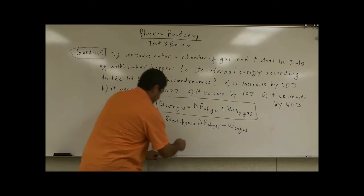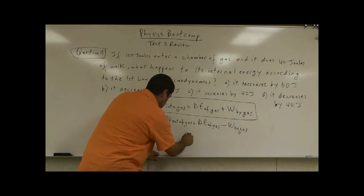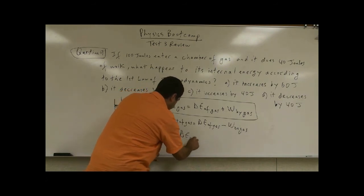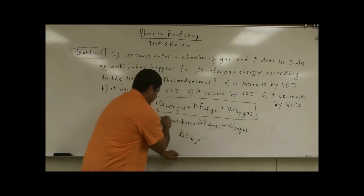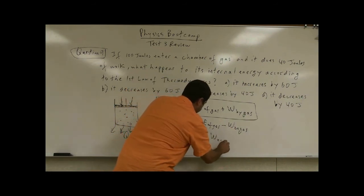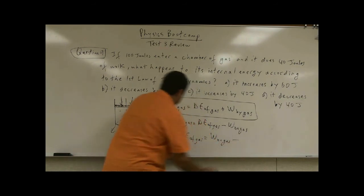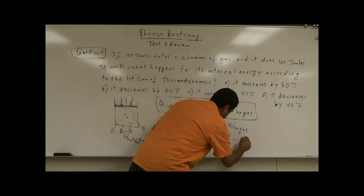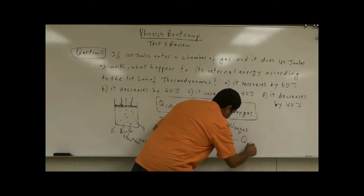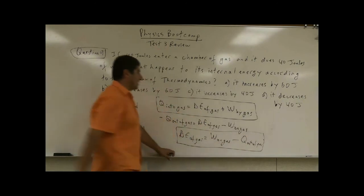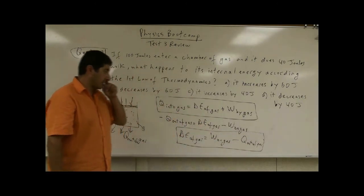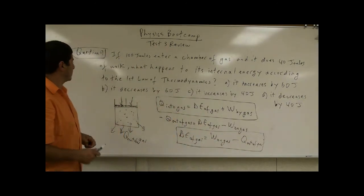So this becomes negative. This one stays positive. This becomes negative. So I could also express it this way. This one goes to the other side. And then you could write this one, isolate this one here. And so you could say delta E of gas is equal to work on gas minus Q out of gas. So that's another way of expressing the same concept here.